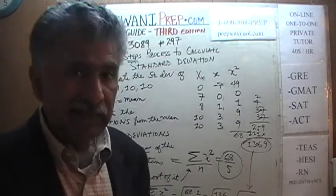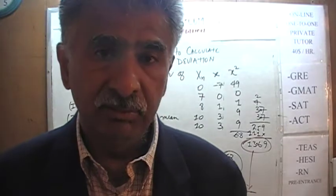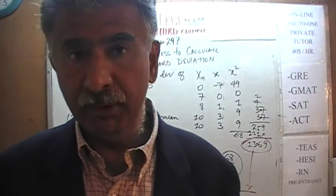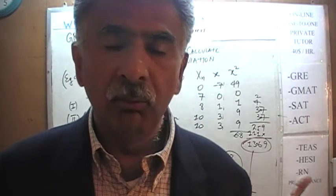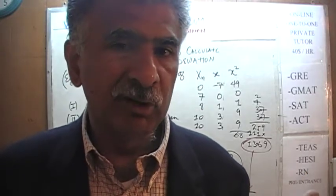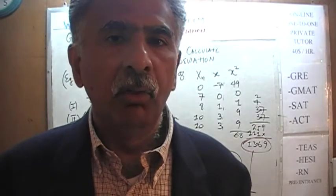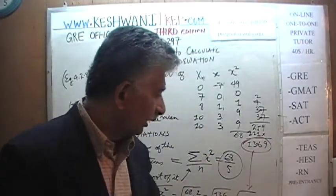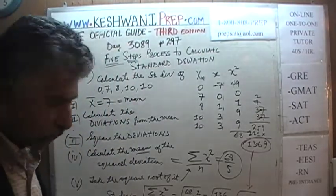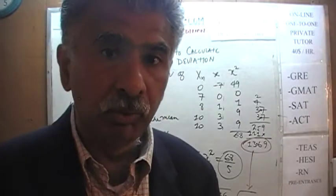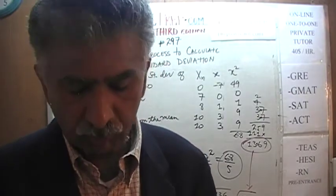Now that we have 3.7, what does it actually tell us? We know how to calculate it, but what information does it carry? We will discuss that tomorrow — tomorrow we will discuss what is known as normal distributions. Once we understand the normal distribution, we will understand what standard deviation actually tells us. Standard deviation is a very powerful piece of information. We will do that tomorrow. Bye now.